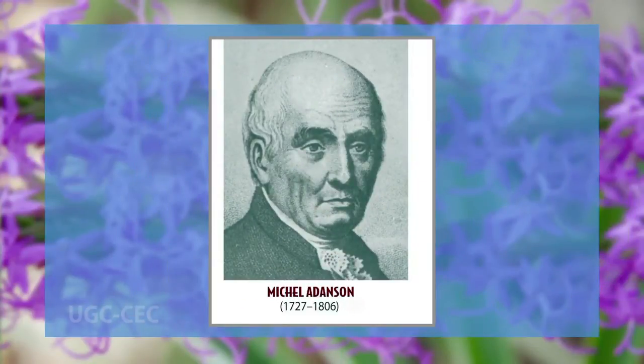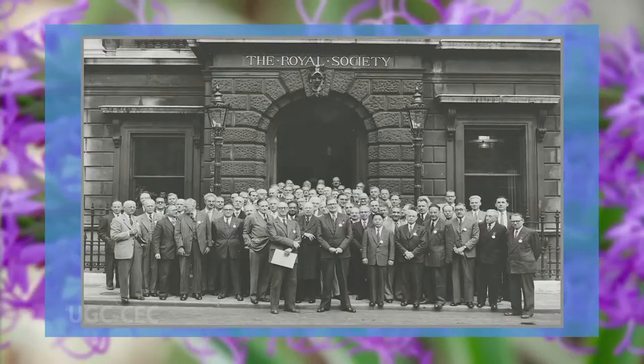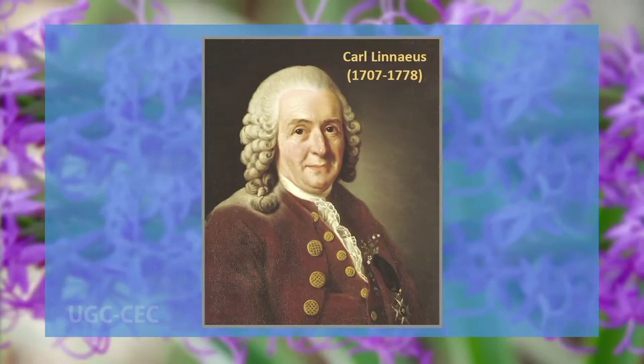He published Histoire Naturelle du Sénégal in 1757, describing the flora of Senegal and a survey of molluscs. In 1761, Adanson was elected as foreign member of the Royal Society of London. In 1763, he published Familles des Plantes in two volumes, recognizing 58 natural orders based on their natural botanical relations. In this book, he proclaimed his contempt for artificial systems and proposed a natural classification based upon all characters rather than upon a few arbitrarily selected ones, an attempt that brought him into conflict with Linnaeus.